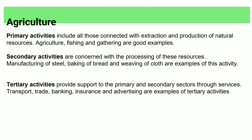Primary activities are all those connected with extraction and production of natural resources. Examples of primary activities include agriculture, fishing, and gathering.